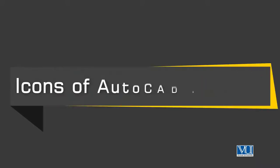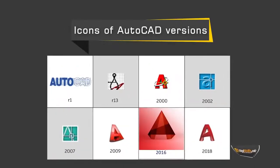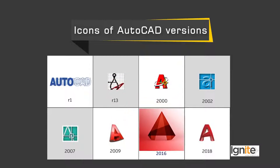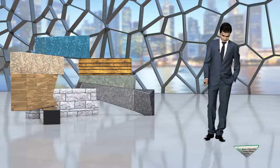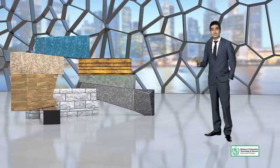We can see different icons with the passage of time, right from 1982 till the present. One by one, products have been released with different icons, showing how AutoCAD has evolved. These are the different icons used up to 2016.